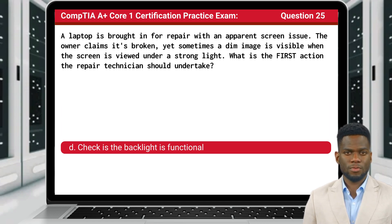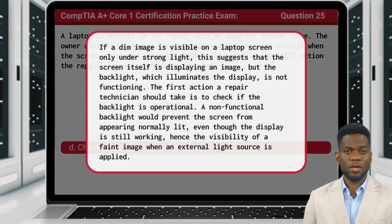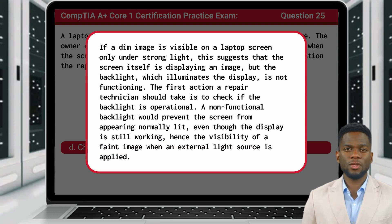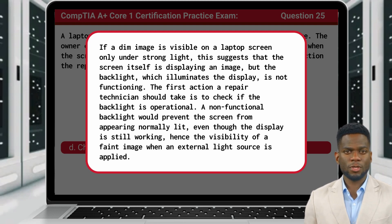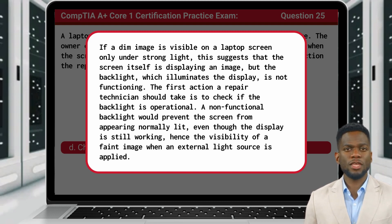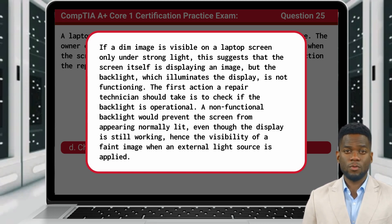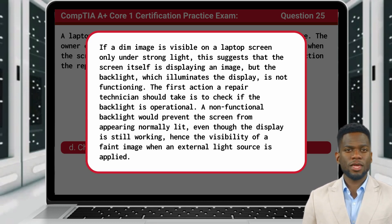The answer is D: check if the backlight is functional. If a dim image is visible on a laptop screen only under strong light, this suggests that the screen itself is displaying an image, but the backlight, which illuminates the display, is not functioning. The first action a repair technician should take is to check if the backlight is operational. A non-functional backlight would prevent the screen from appearing normally lit, even though the display is still working, hence the visibility of a faint image when an external light source is applied.